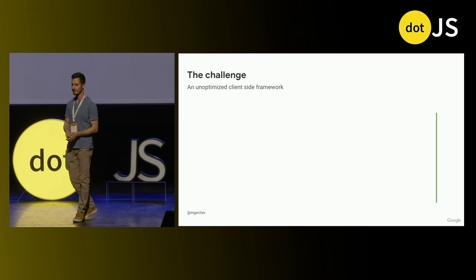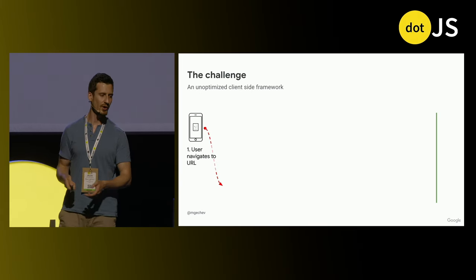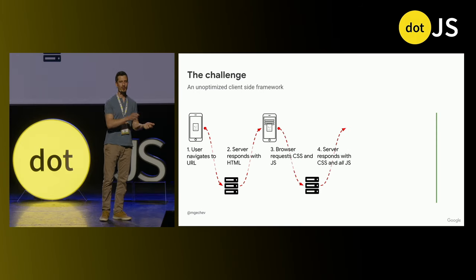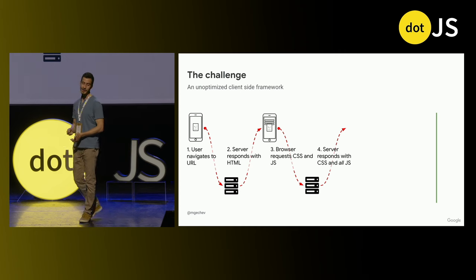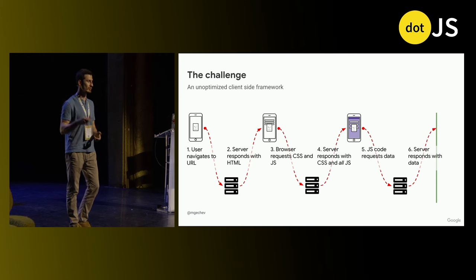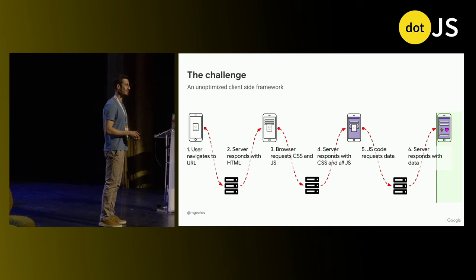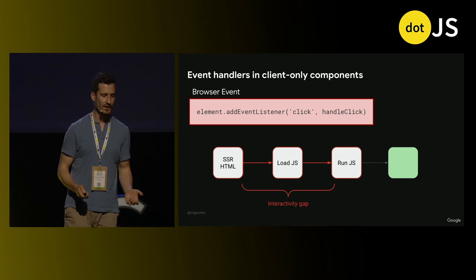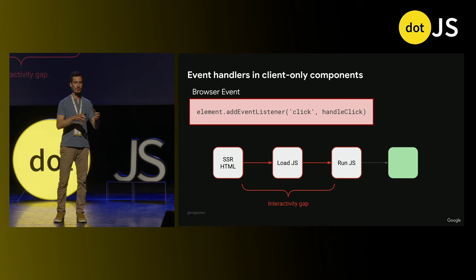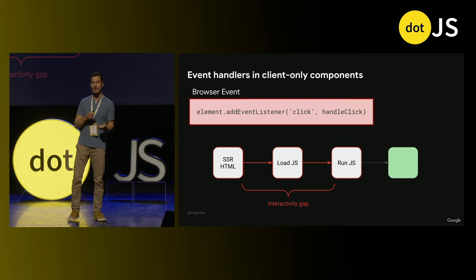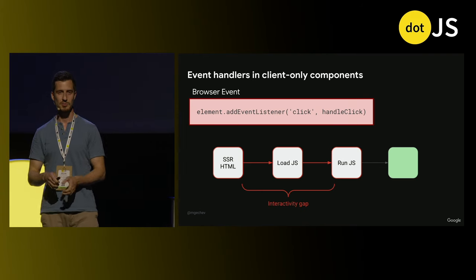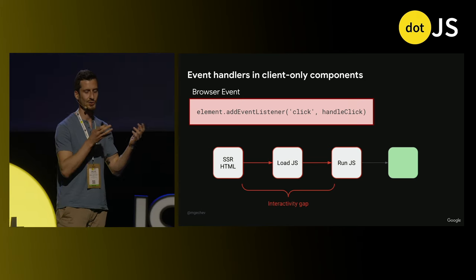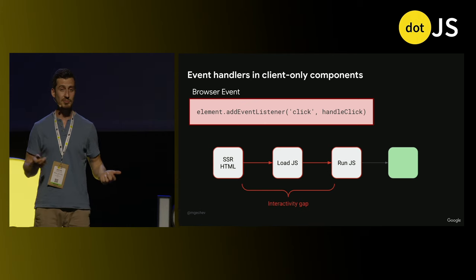How do we usually serve a web application? The user opens their browser, enters a URL, and the server responds with HTML. We find all referenced scripts, JavaScript and CSS, download them, execute the JavaScript, fetch data from the server, and finally make the application interactive. This could take a lot of time on slow networks. The most obvious optimization would be server-side rendering — we provide markup so the browser renders the application, but it still needs to download and execute JavaScript and perform hydration to become interactive, leaving an interactivity gap of potentially hundreds of milliseconds.